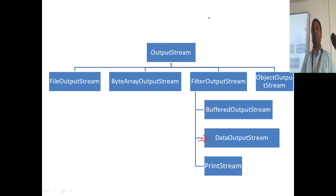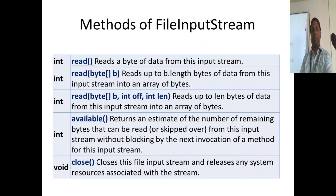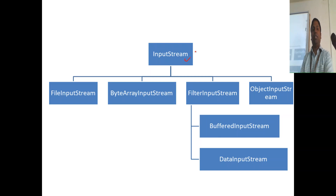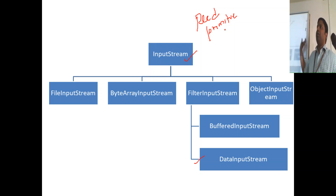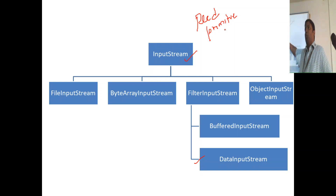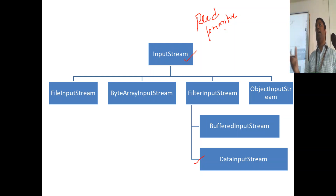What DataOutputStream does - likewise you have an input stream also. What is this input stream? Here you have this input stream for reading in bytes, and again you have a DataInputStream. The use of DataInputStream and DataOutputStream is that you can read primitive data from your stream. Primitive data is coming in as bytes. So when you want to read boolean, string, or float, you can use DataInputStream. It uses an input stream as its argument, reads in bytes, and converts those bytes to float, character, string, or integer. It's like a class using the input stream.